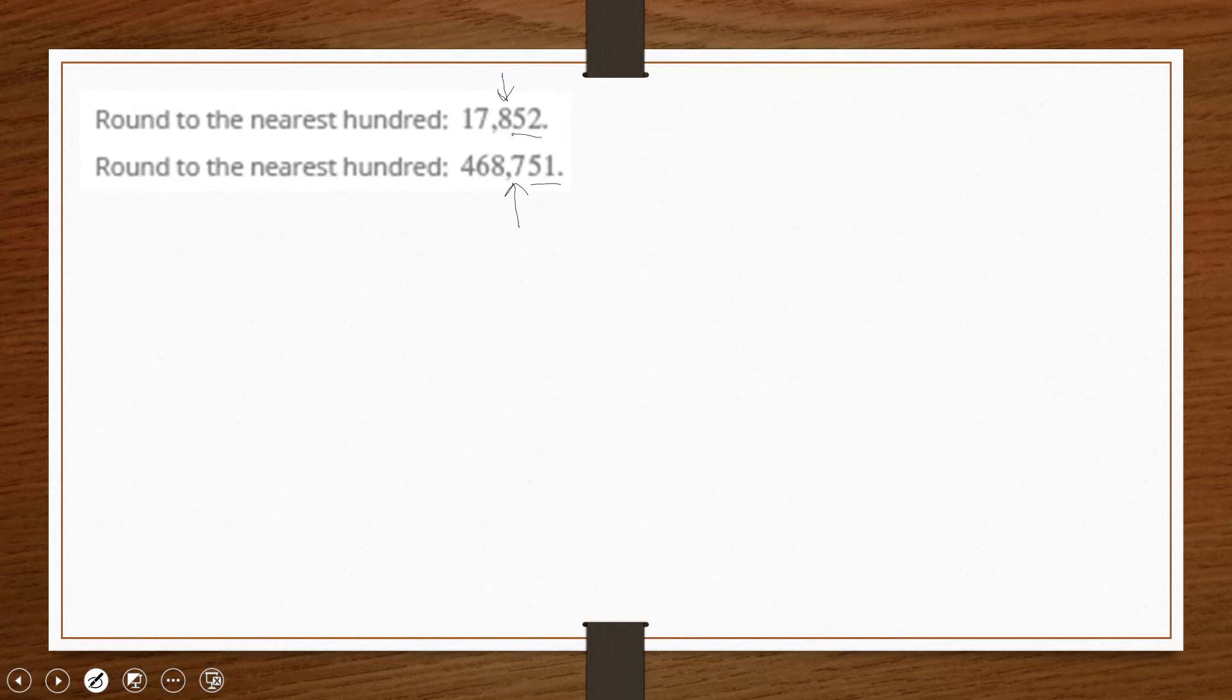So in both cases, we say that 17,852 in the place value to the right of where we're interested in rounding is a five or more, which means that 17,852 is actually closer to 17,900 than it is to 17,800.